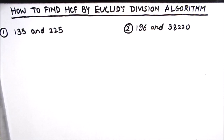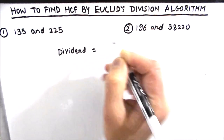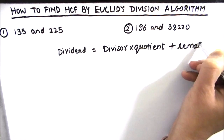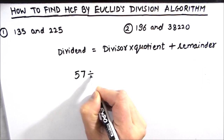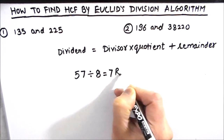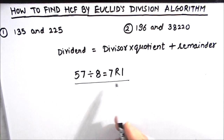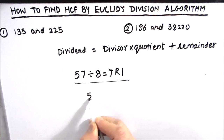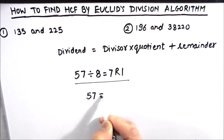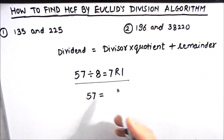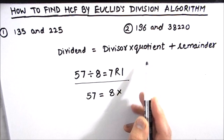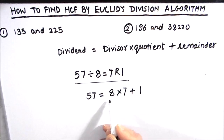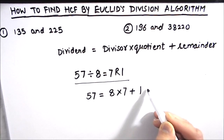According to Euclid's division algorithm, we can express a dividend as the product of the divisor and quotient plus the remainder. For example, 57 divided by 8 equals 7 with a remainder of 1. So this division problem can be expressed as: 57 = 8 × 7 + 1. This is Euclid's division algorithm, covering dividend, divisor, quotient, and remainder.